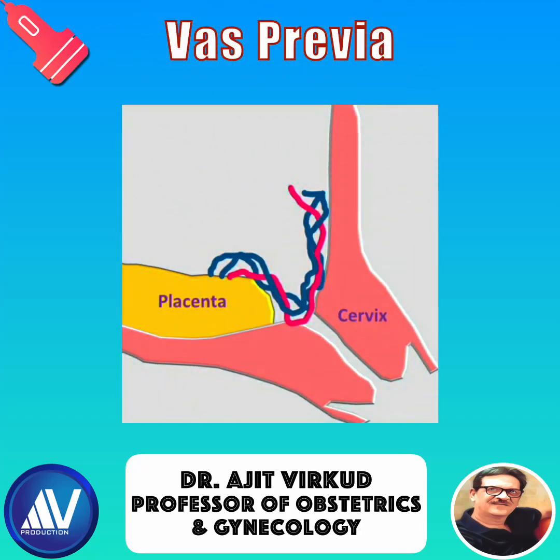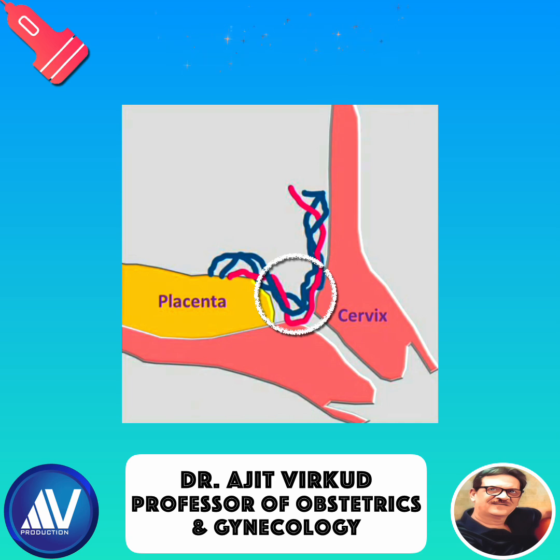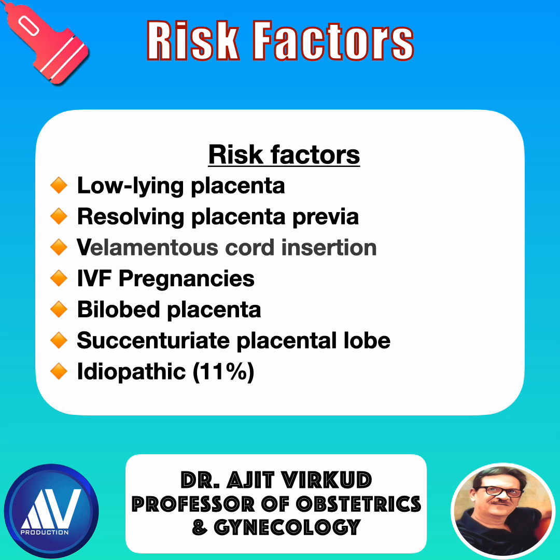Let us delve into the intricacies of cord presentation abnormalities. Vasa previa is a condition characterized by the presence of umbilical vessels that are unsupported by the umbilical cord or the placenta. These vessels traverse the fetal membranes in the lower uterine segment or extend onto the internal cervical opening. The rupture of these vessels during labor, due to spontaneous or artificial rupture of membranes, poses a significant risk of fetal demise.